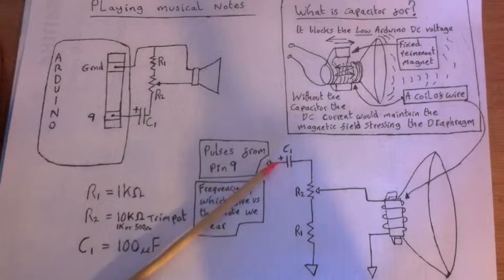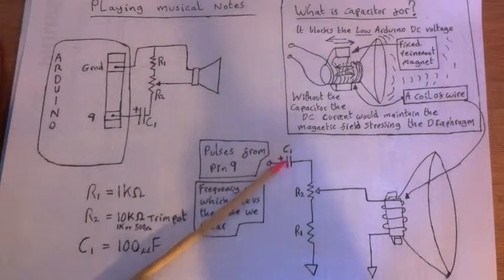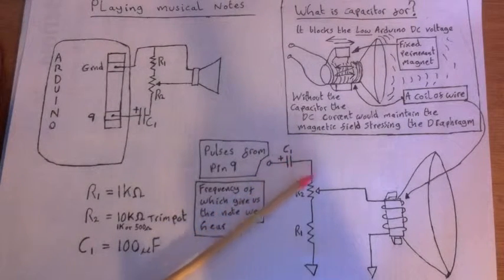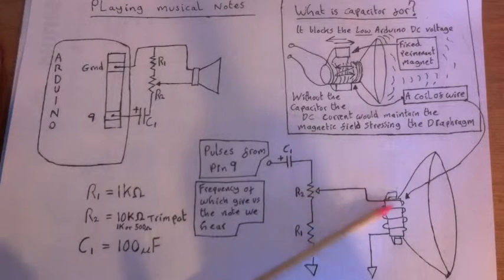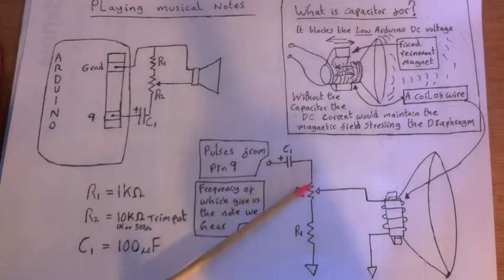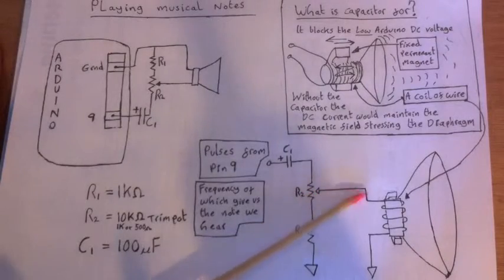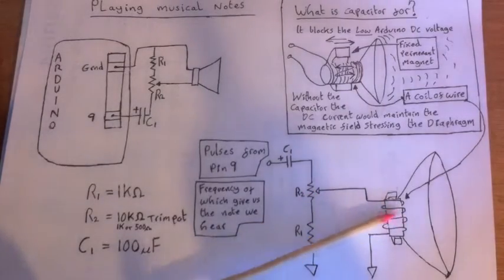Now if we've got a DC voltage, even a low voltage across here, then if there wasn't a capacitor there, then that voltage would be always dropping across this coil. Some of it would drop across this part of this resistor, and some of it would always drop across this coil of wire.